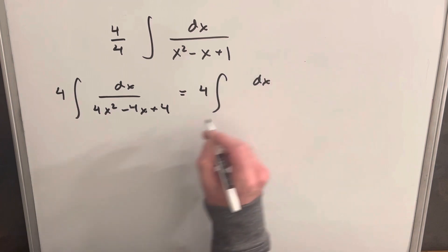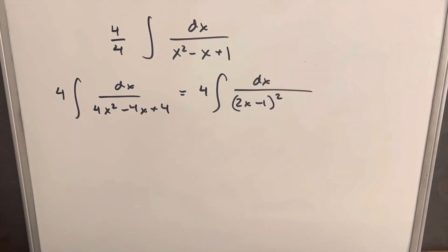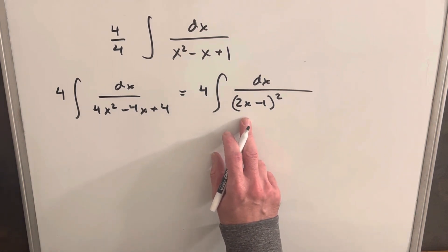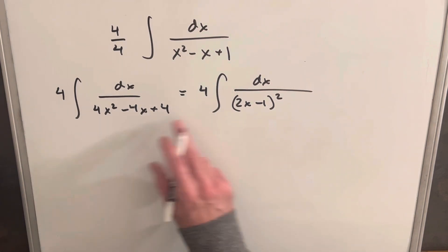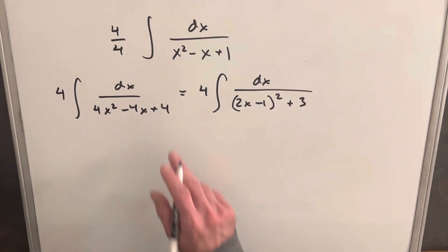So we'll write this as 2x minus 1. When we square this out it's going to be 4x squared minus 4x plus 1. But we have a plus 4 here, so we're going to need to add a 3 to get to our 4.